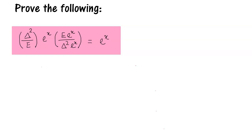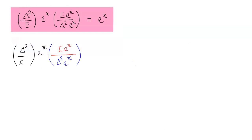Our first question is to prove the following. It looks very complicated and tricky, so let's see how we can simplify it and solve it. The left-hand side of this question comprises three parts shown in three different colors. Let's get started with the first part. We are going to convert our delta in terms of the shift operator, which is equal to (e-1)² upon e of eˣ. We shall write the rest of the terms later — first, let us solve this portion.